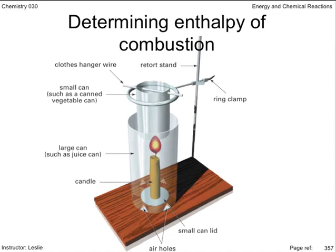This is a sample setup — study it for a moment. Ask yourself what would be inside the vegetable can, and why it is suspended by a clothes hanger wire. What is the purpose of the large juice can? What measurements would you need to make, and how would you make them, in order to gather enough data to determine the enthalpy of combustion of this candle?